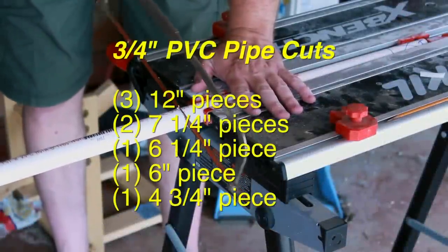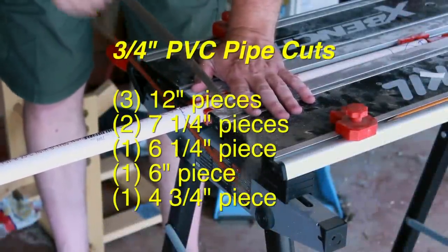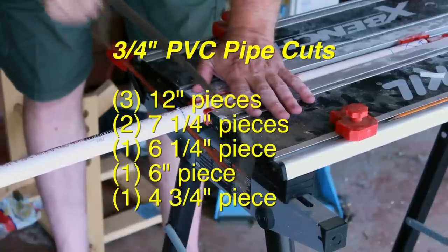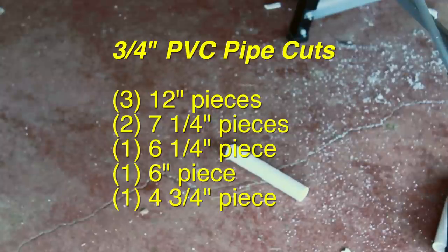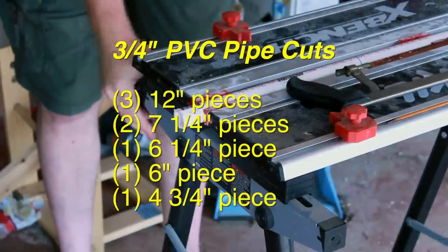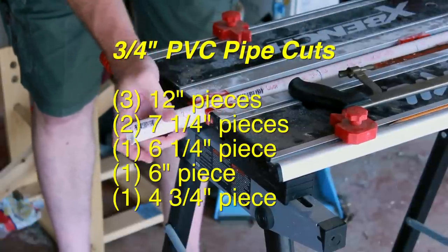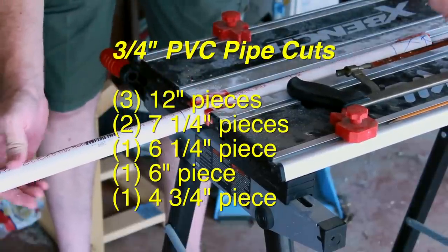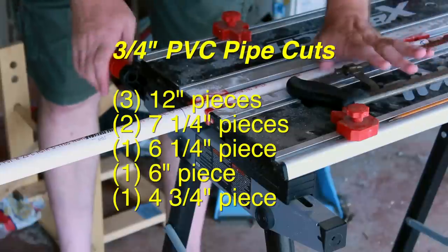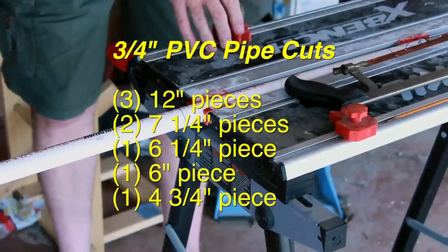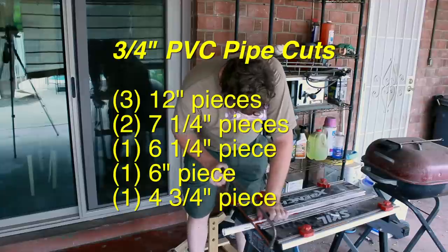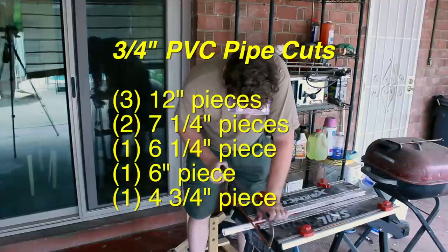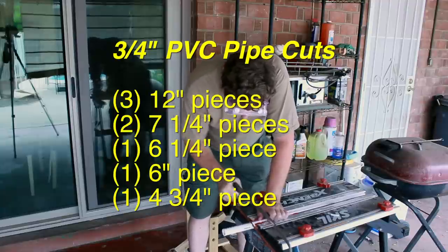We'll start by cutting up the pieces. This is all made out of 3/4 inch PVC, the kind you'd get at the hardware store, just water grade PVC. And you can easily do this with a six foot piece if you cut it without much waste. You'll need 3 twelve inch pieces, 2 seven and 1/4 inch pieces, 1 six and 1/4 inch piece, 1 six inch piece, and 1 four and 3/4 inch piece.